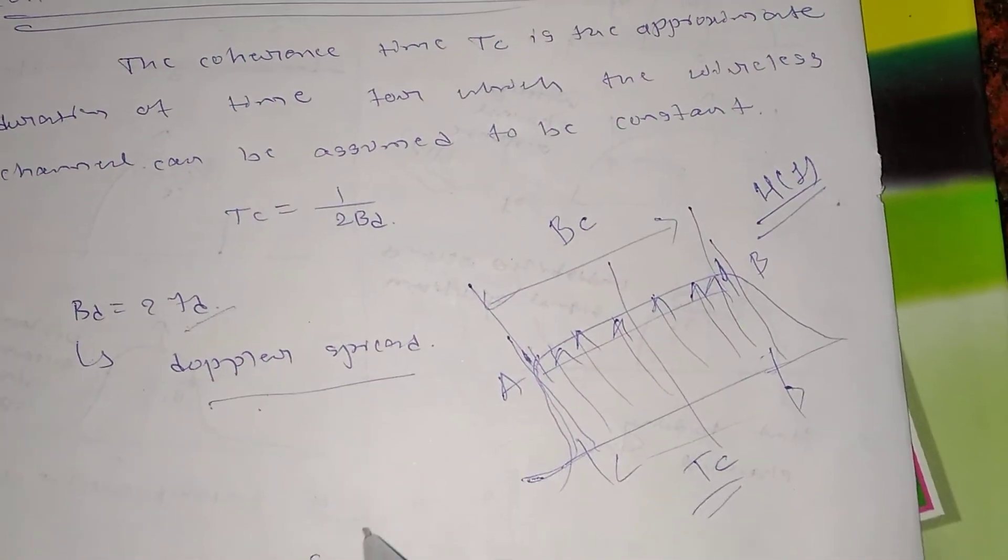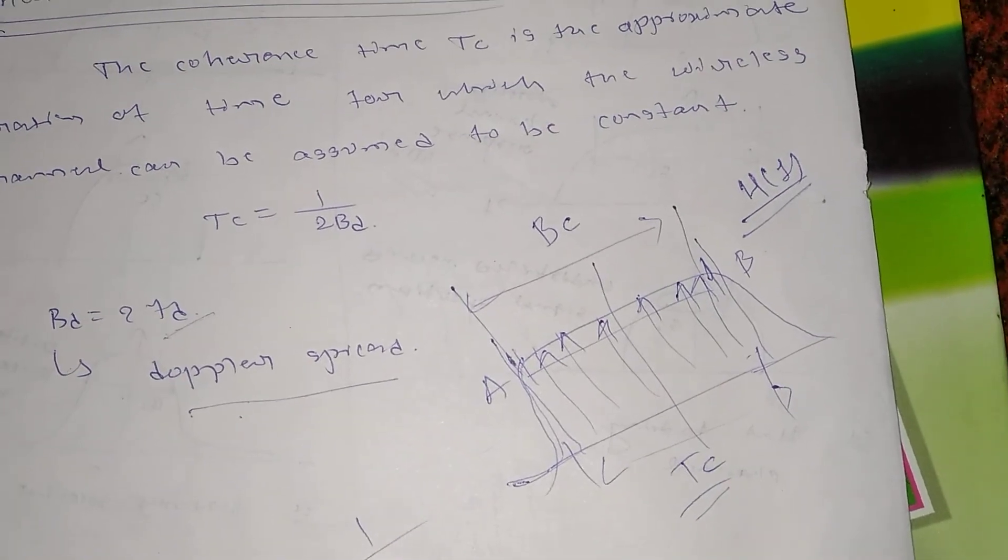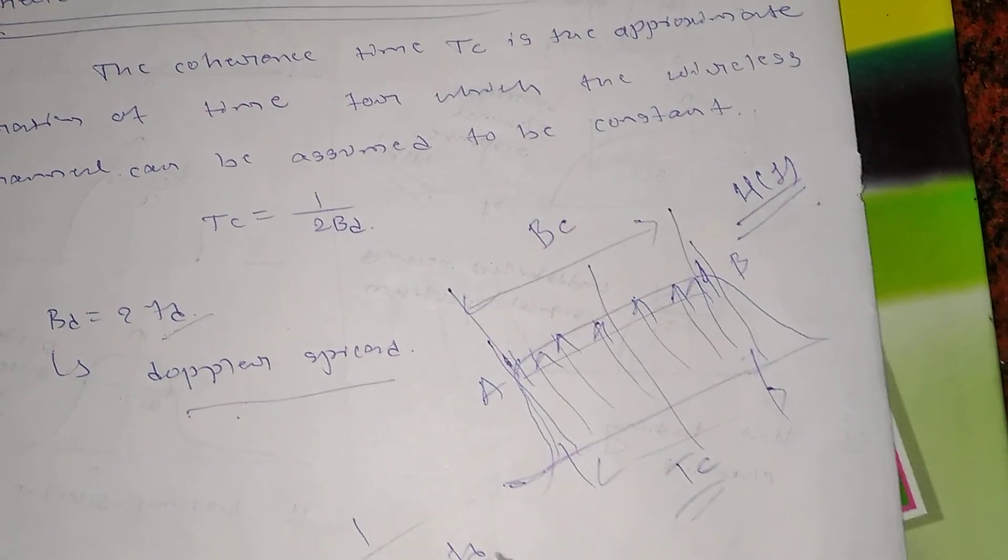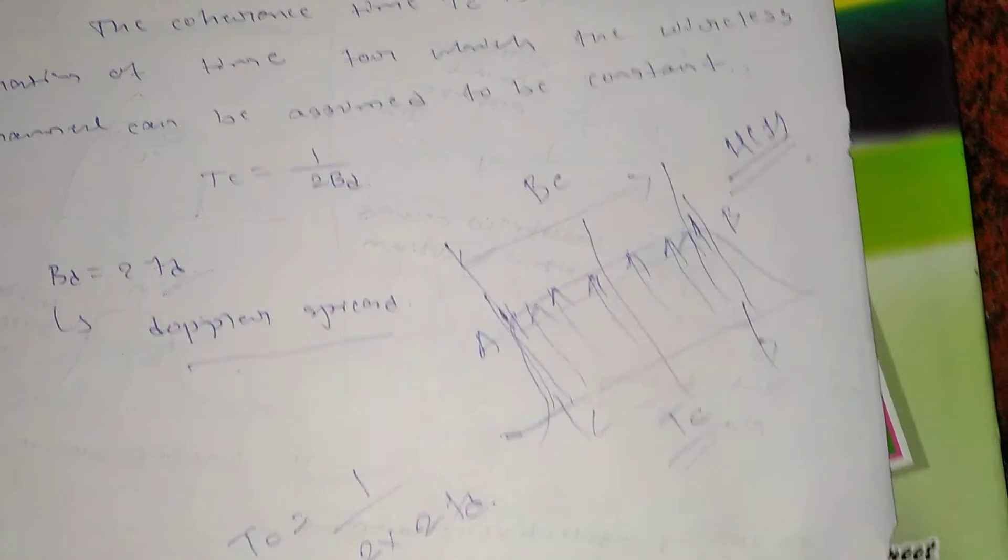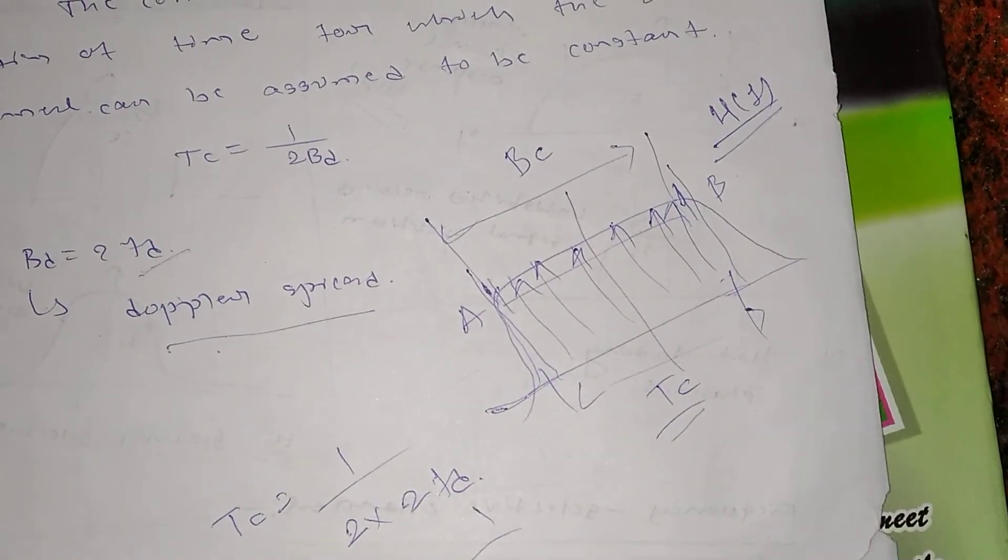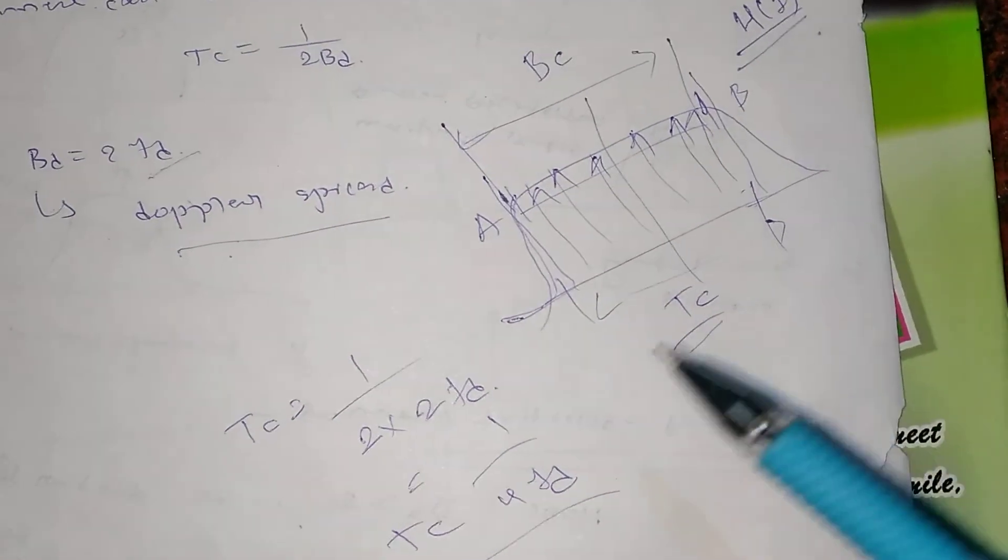This also explained, and Doppler shift frequency. So I can write Tc equal to 1 divided by 2 into 2FD. Here if I replace BD with this 2FD, then I can write 1 divided by 4FD.